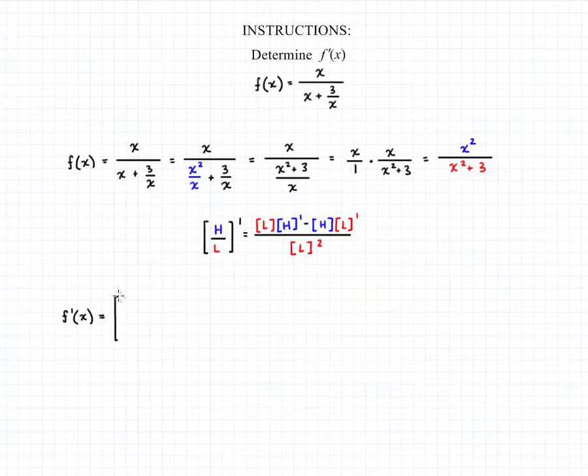So in our case, we're looking for f prime of x of our modified function. So our high function or our numerator will be x squared, and our low function is going to be x squared plus 3.